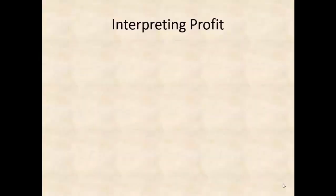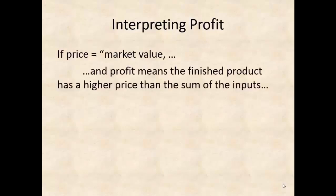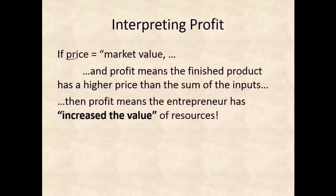I want to keep those examples in mind because we're going to talk about what happens to profit-making companies and what happens to loss-making companies—a crucial aspect of how the market process functions. But first, let's talk more about what profit and loss mean. Price is the market value of a product. Profit means a finished product created by a business has a higher price than the sum of the prices of all the inputs—a higher market value than the sum of the inputs.